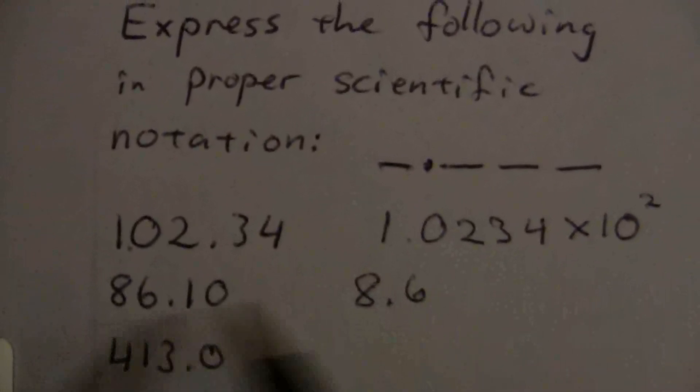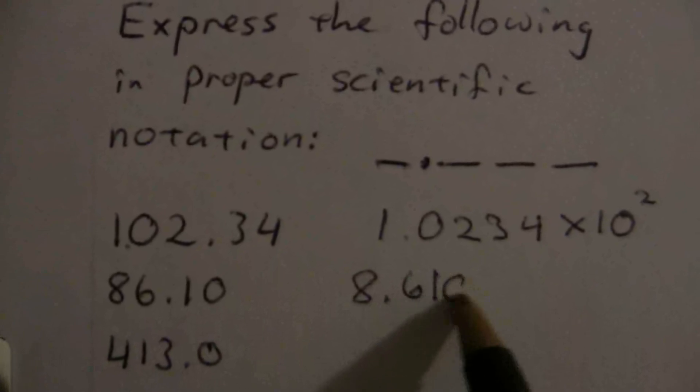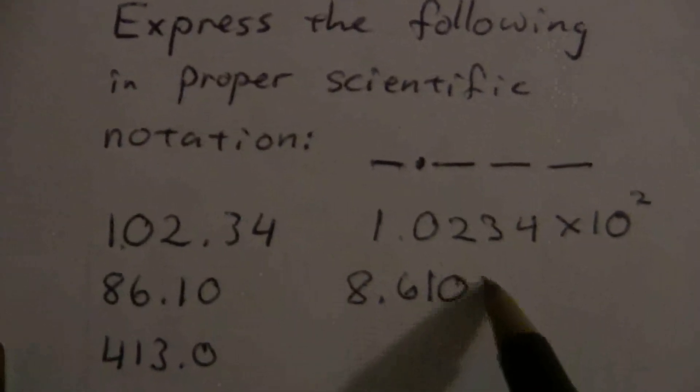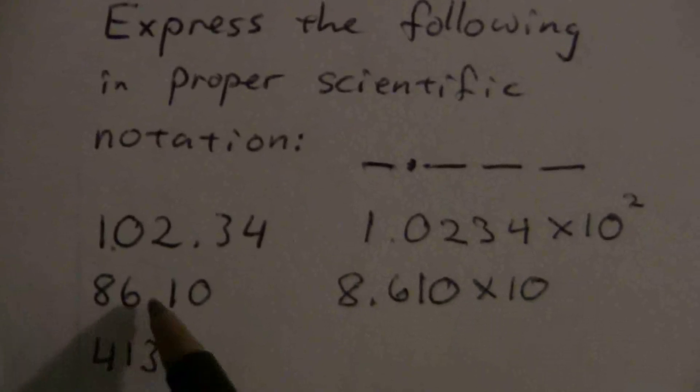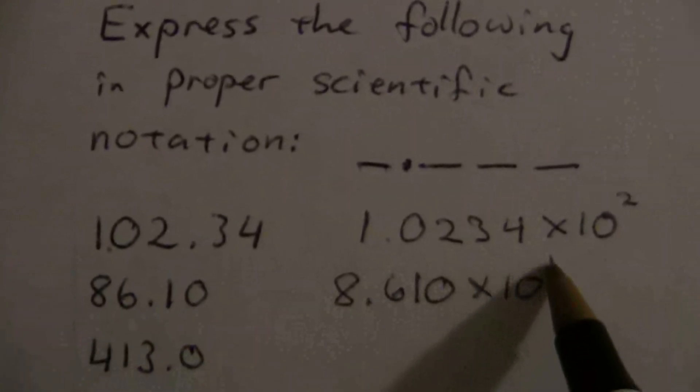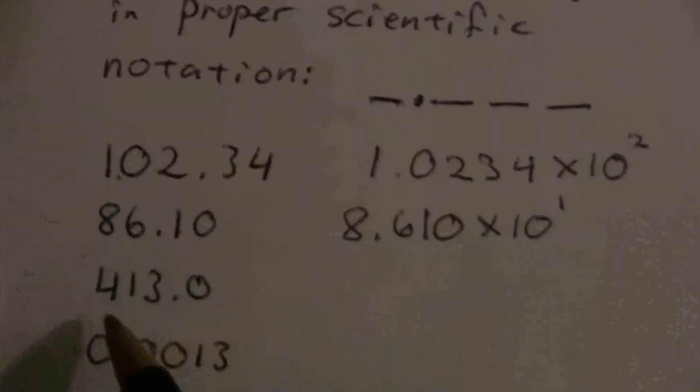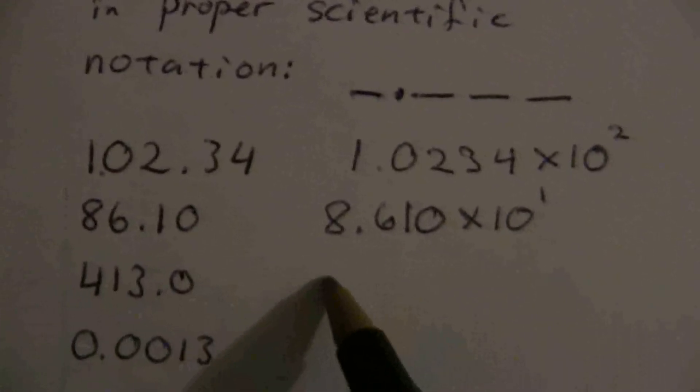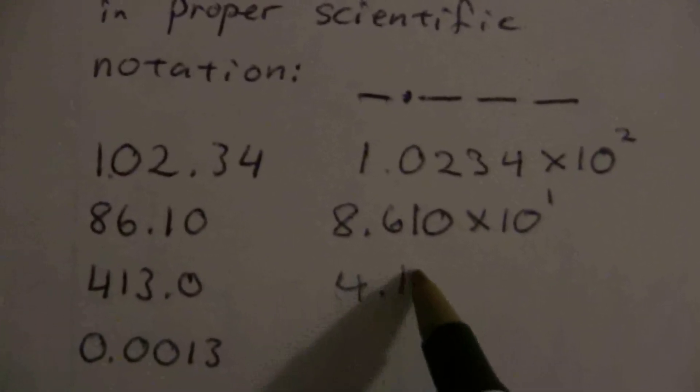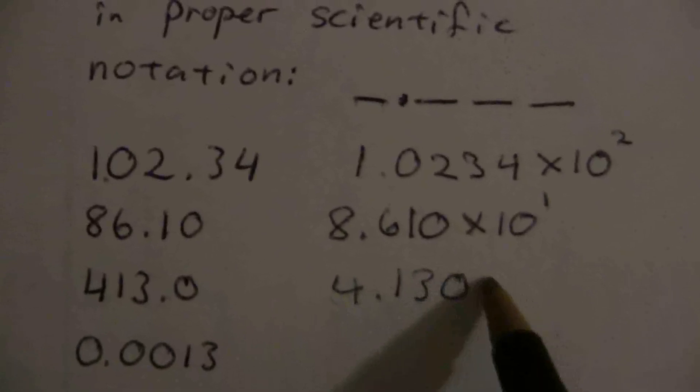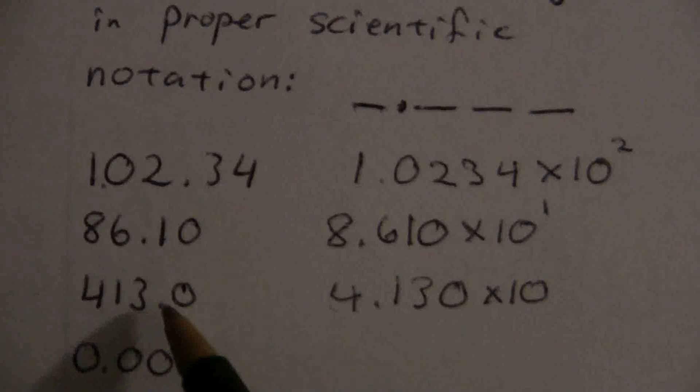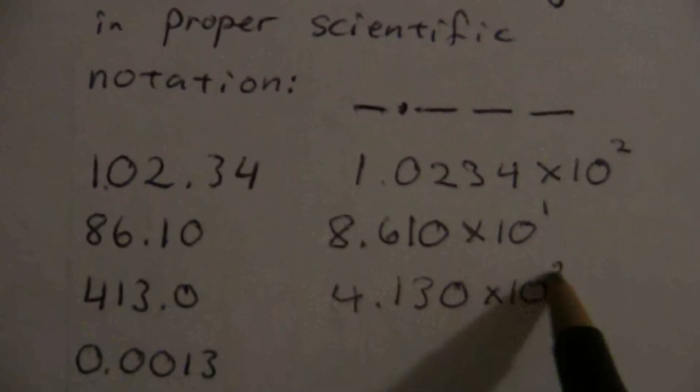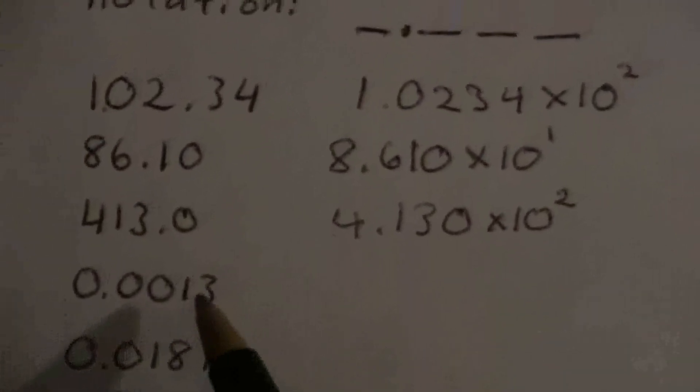With this one, same thing. We can write the numbers out: 8.610, and that's going to be times ten to the first power. Here, same sort of thing: 4.130 times ten to the two.